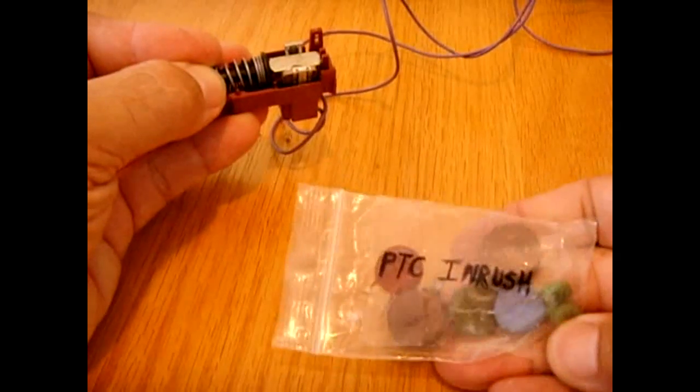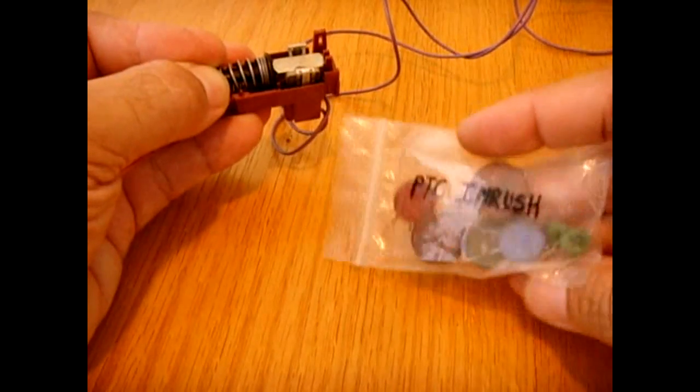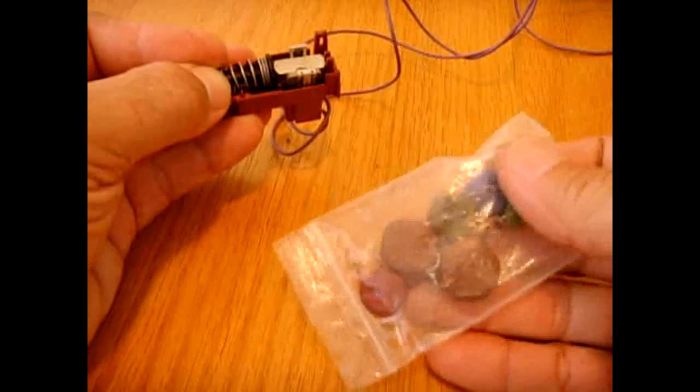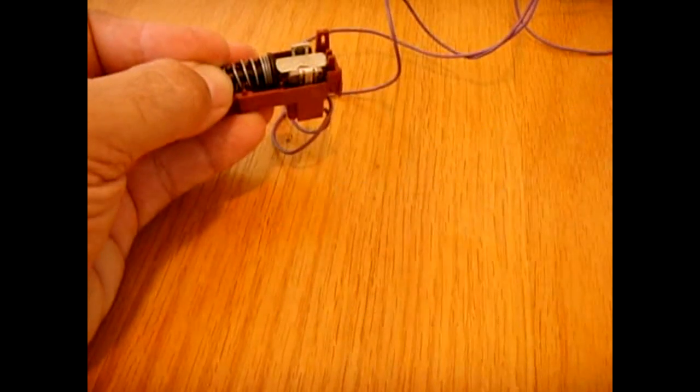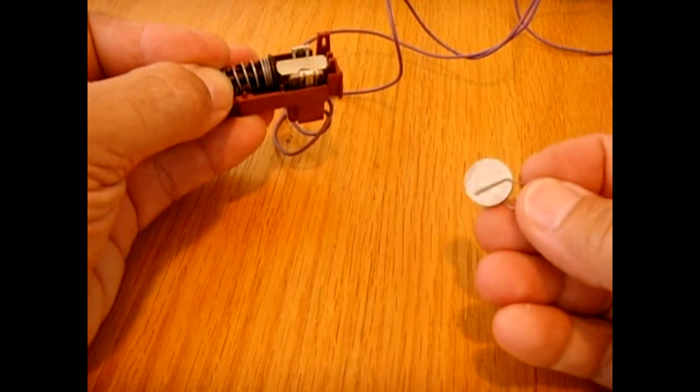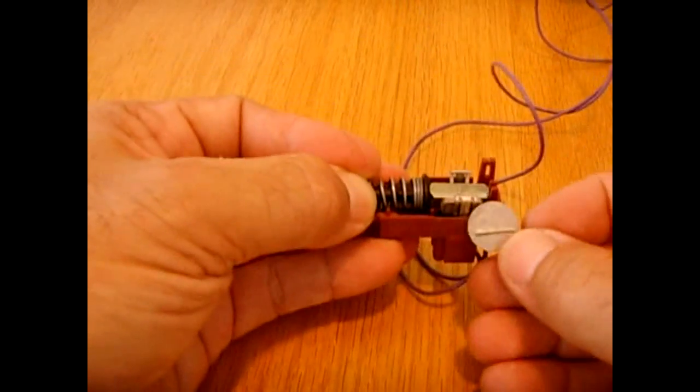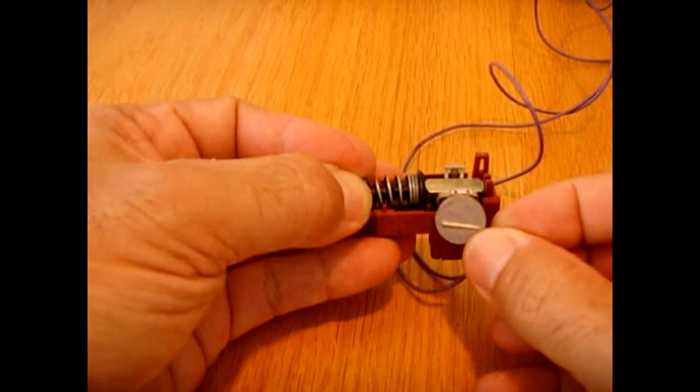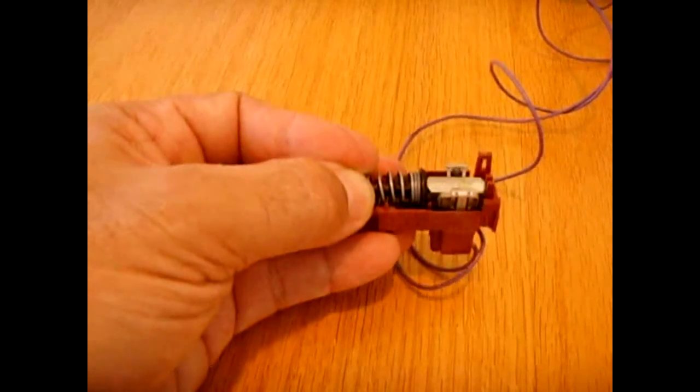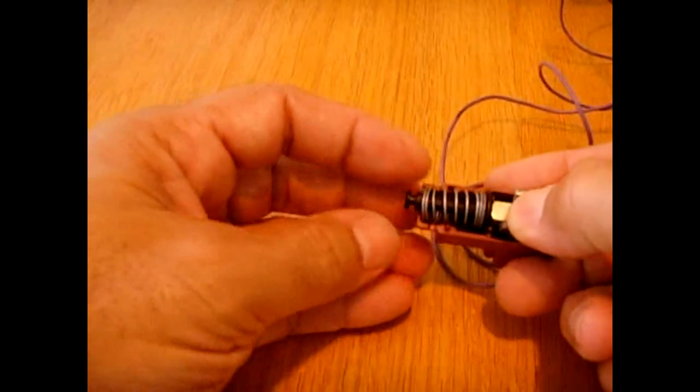PTCs could be just like these here, PTC inrush. I have another video showing how these work. This one here is very similar except it's round instead of rectangular, and this could be bonded the same way right against the side. Let me pop the spring out, this is just a return spring.